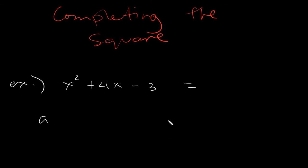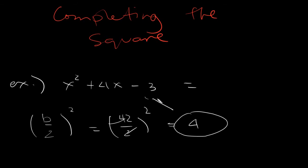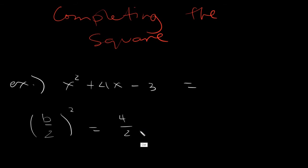You can test whether it's a PST by taking the middle term, dividing it by 2, and squaring the result — that is, b over 2 squared. For example, you have 4x, so b over 2 squared is 4 divided by 2, which gives 2, and 2 squared equals 4. If that number matches the constant and the numerical coefficient of our leading term is 1, then our given is a PST.